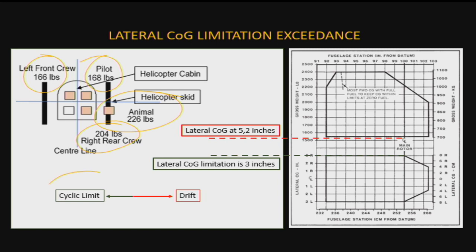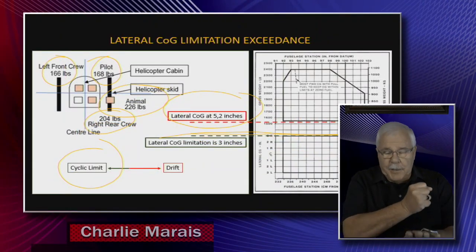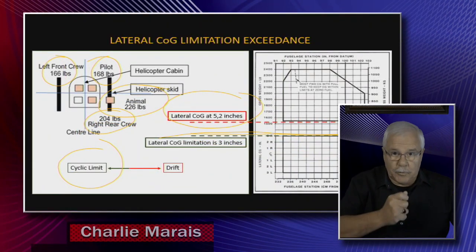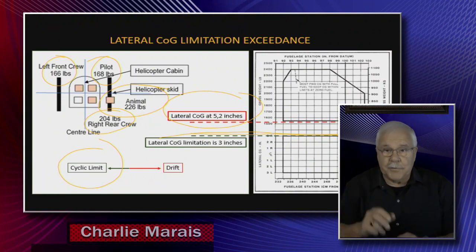At three inches of CG to the right, you reach the cyclic stop. When they measured what this gentleman had on the skid, it turned out to be a lateral center of gravity of 5.2 inches. So when you take off, the helicopter is going to drift to the right.